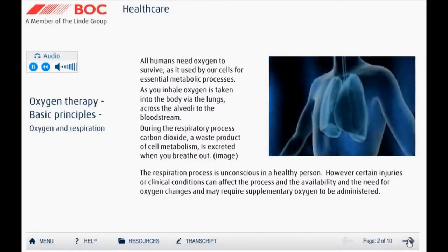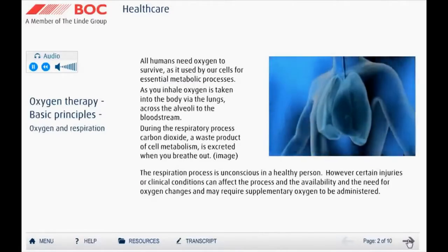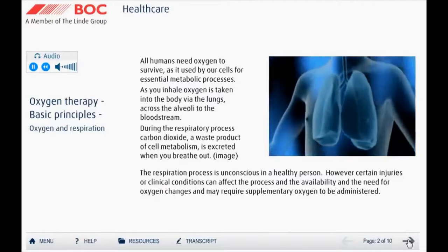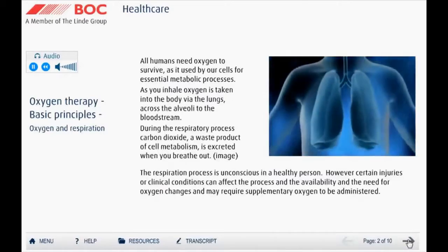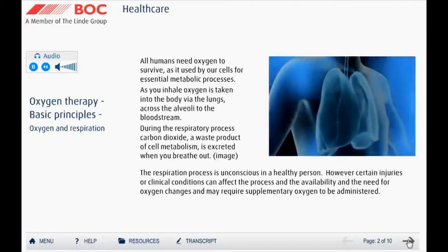All humans need oxygen in order to survive, as it is used throughout the cells in our bodies for essential metabolic processes. Oxygen enters the body through the process of inhalation. Ambient air is taken in through the lungs and oxygen diffuses across the alveoli into the bloodstream, where it is circulated around the body to oxygenate the cells.